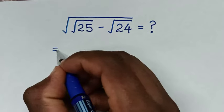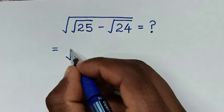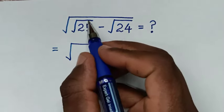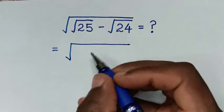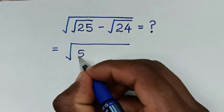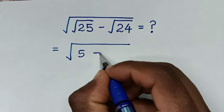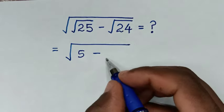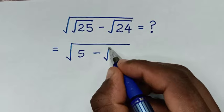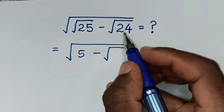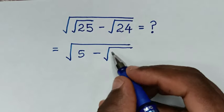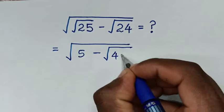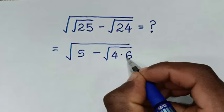So, it will be equal to square root of — this square root of 25 is 5, then minus square root of 24, which is the same as square root of 24. And 24 is 4 times 6.